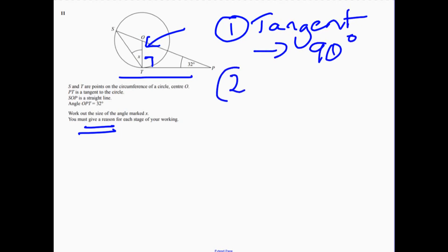Number two, angles in triangle. So 32 and 90, therefore this top one must be 58.